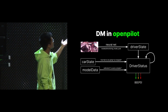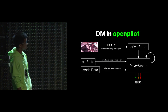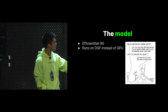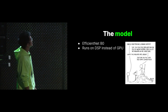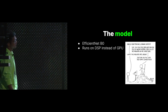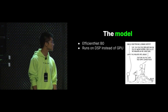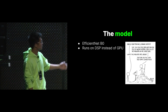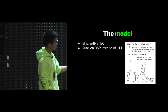The brain of all this is the neural network model we use to extract information from the picture. In more technical terms, the model is EfficientNet V0, which is 8-bit quantized to run on the DSP instead of the GPU, so that the DM model doesn't compete for resources with the driving model — such that they can both have room for growth. If we want to grow the big model in the future, we can do that for both.